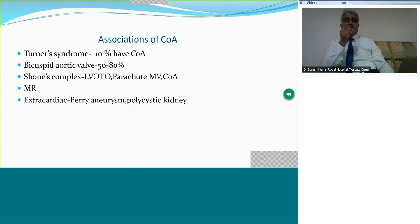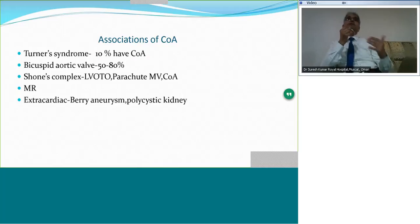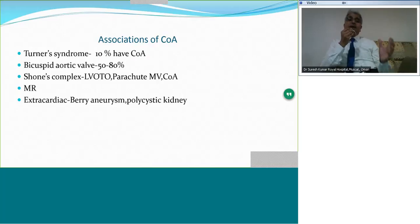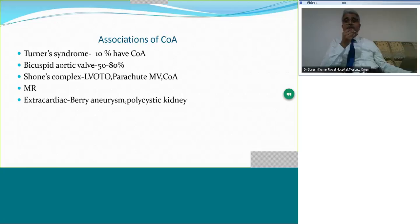Coarctation has important associations. These include Turner syndrome, in which 10% have coarctation. Bicuspid aortic valve occurs in a large number — you should presume it exists and exclude it carefully on echo. Shone's complex involves LVOT obstruction, parachute mitral valve, and coarctation. Mitral regurgitation as an independent problem can also occur in association with coarctation. Extracardiac problems like berry aneurysm or polycystic kidney can also be part of coarctation.